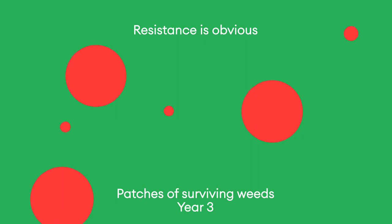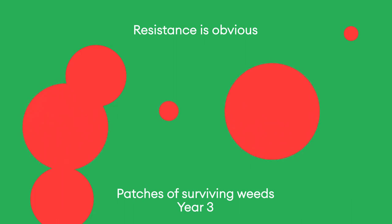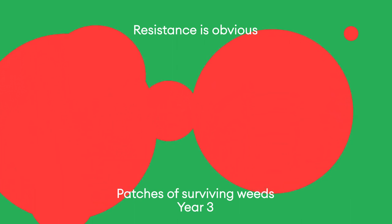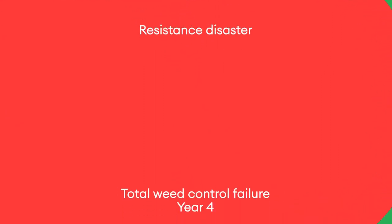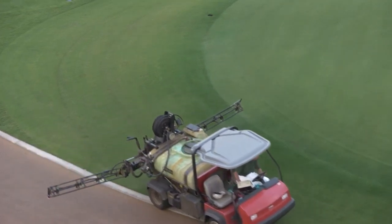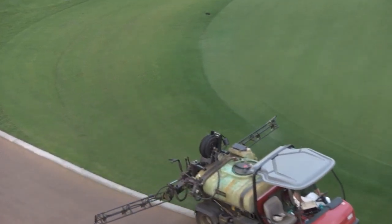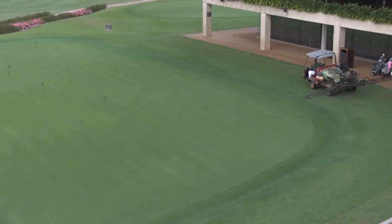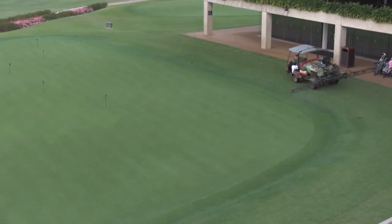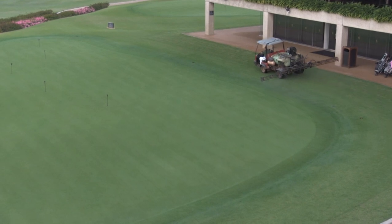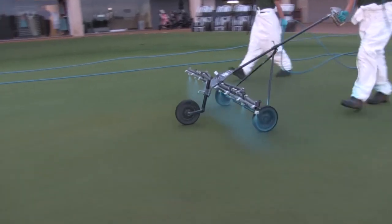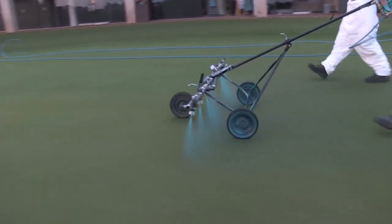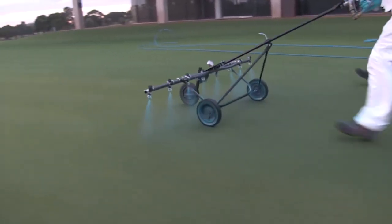Repeated use of a herbicide or herbicides with the same mode of action selects for resistant weeds. Herbicides do not actually cause resistance, but allow weeds that survive to become the dominant species. Start good herbicide resistance management today.